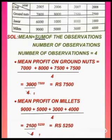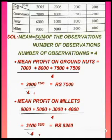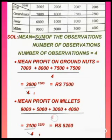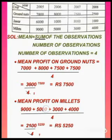Next let us find the mean profit on millets. Similarly, sum of the observations by number of observations. The sum of the observations is 9000 plus 5000 plus 3000 plus 4000, by the number of years, which is 4.